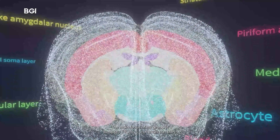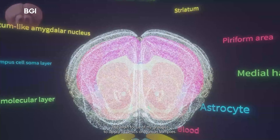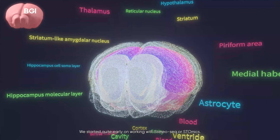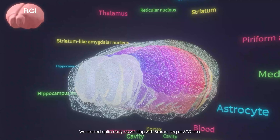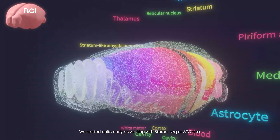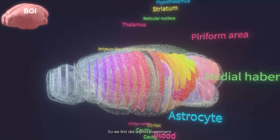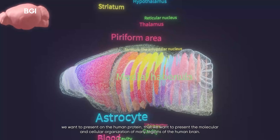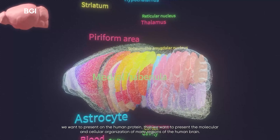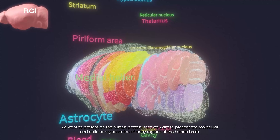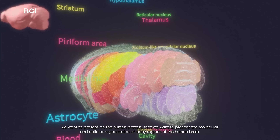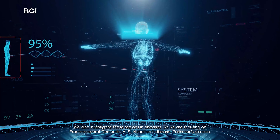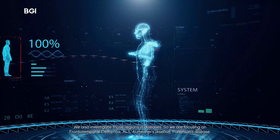The main focus of my group is to apply spatial omics on human samples. We started quite early on working with StereoSeq or spatial omics. We first did a pilot experiment. We want to present on the Human Protein Atlas — the molecular and cellular organization of many regions of the human brain. We also investigate those regions in diseases.